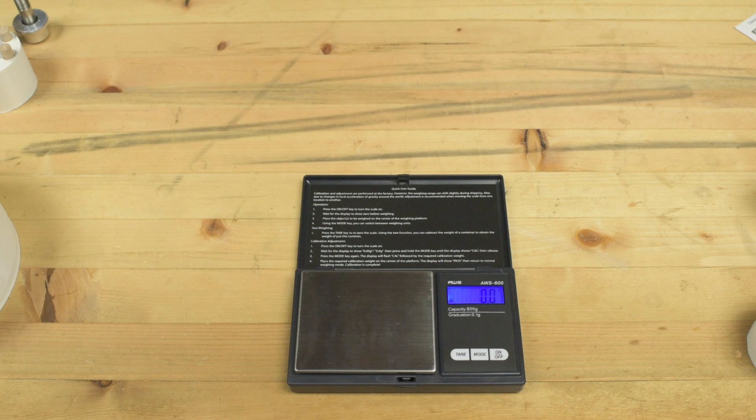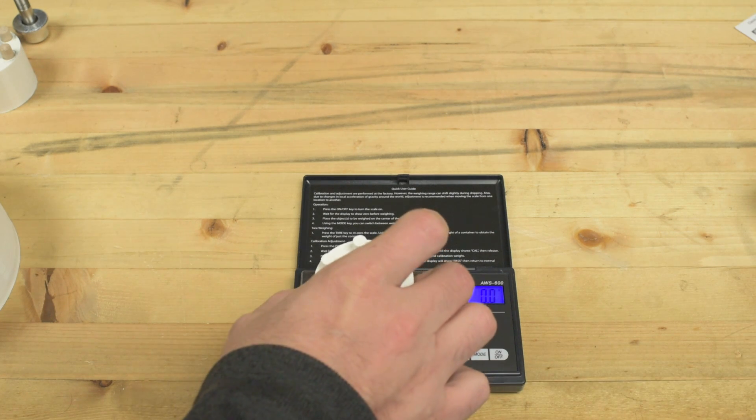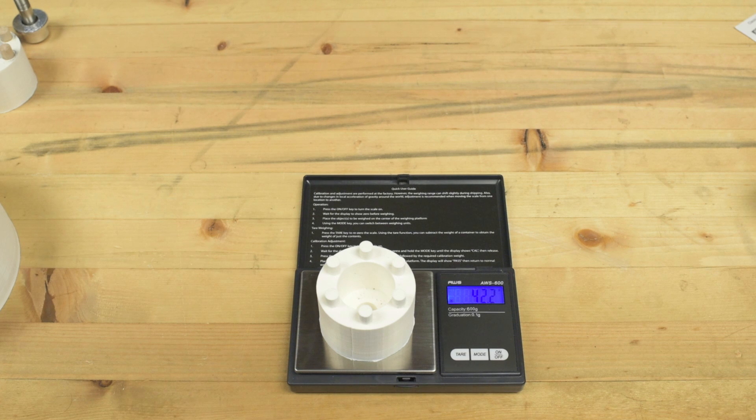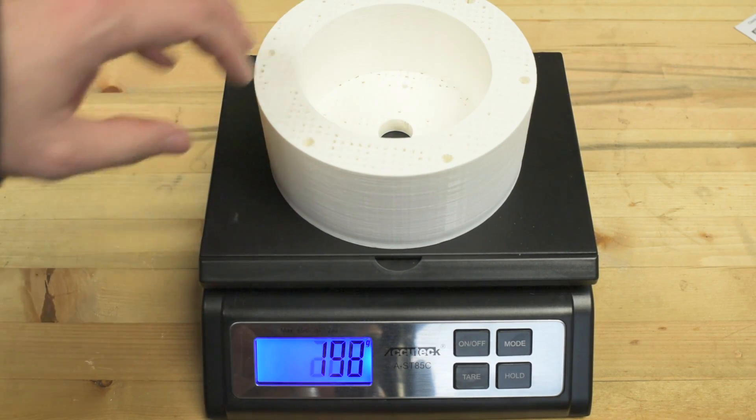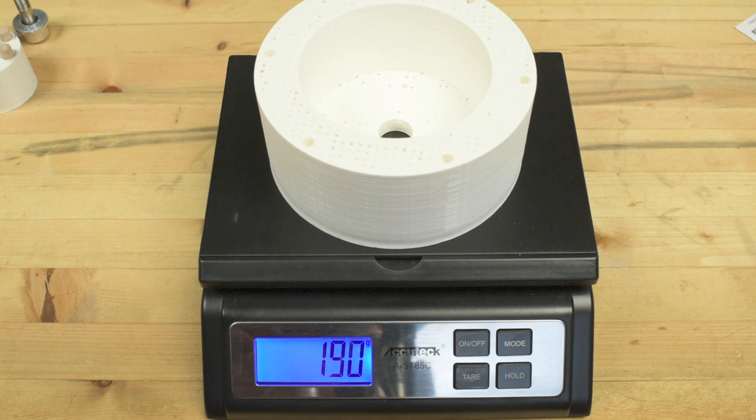All right. So the thing with PLA plastic is it comes in these like one kilogram spools and they're not free. They cost like $45 each. So to give you an idea how much these parts cost, we typically weigh them. So the adapter is 42.2 grams. And then the second part, this one took 16 and a half hours to print. It weighs 192 grams. So quite a bit heavier.